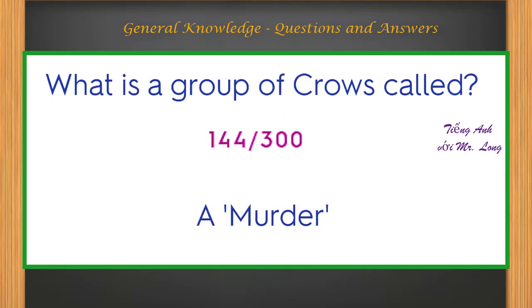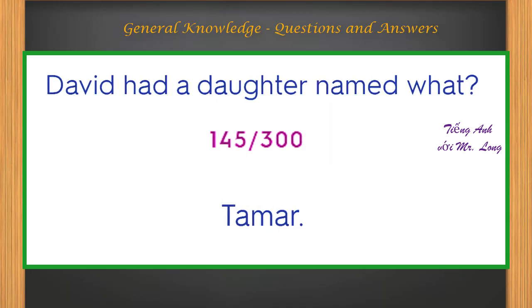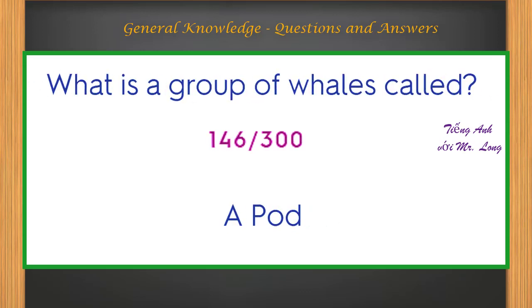What is a group of crows called? A murder. David had a daughter named what? Tamar. What is a group of whales called? A pod.